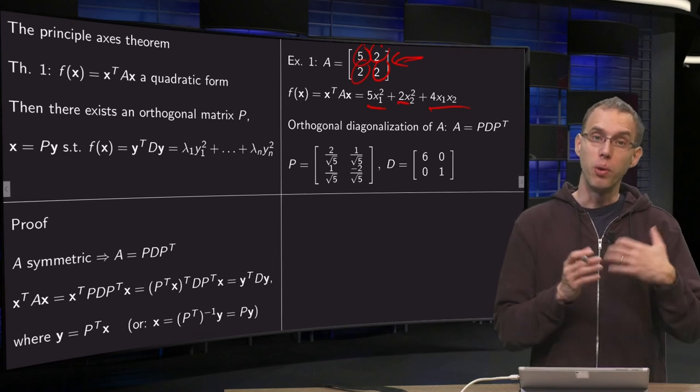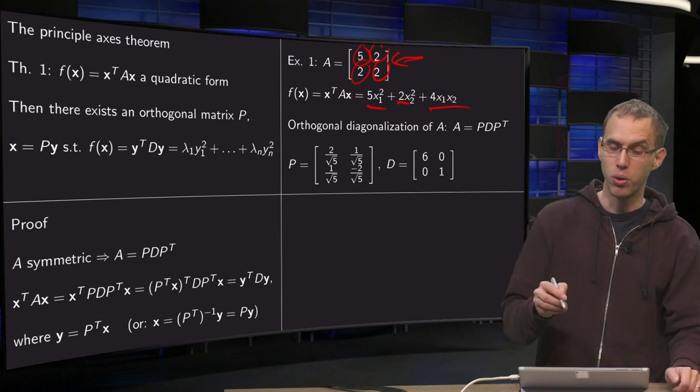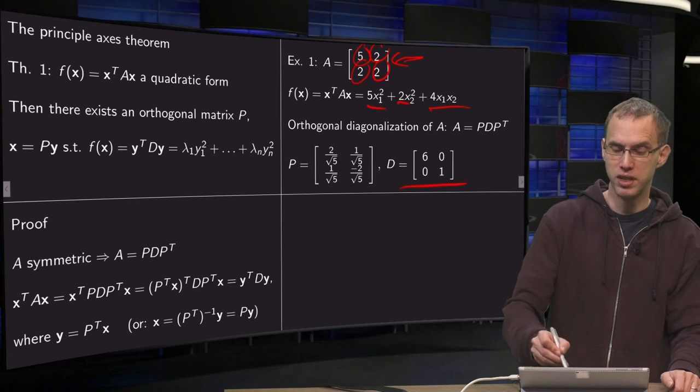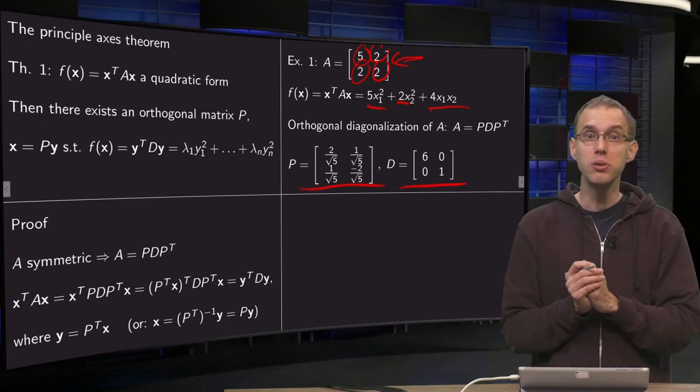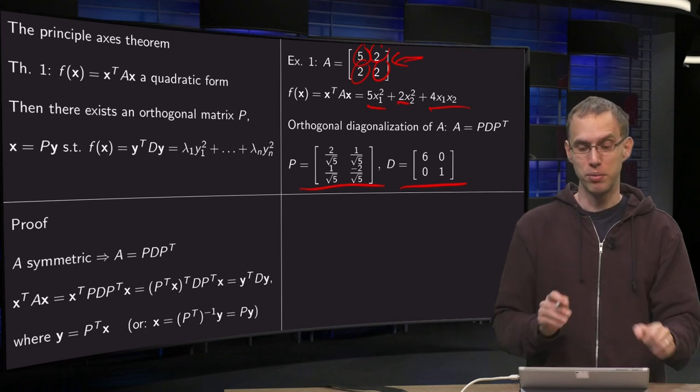Now, you know how to diagonalize A. I already did that for you. Here is the orthogonal diagonalization with the matrix D and the matrix P. Now, using this orthogonal diagonalization, you can find a new variable y.